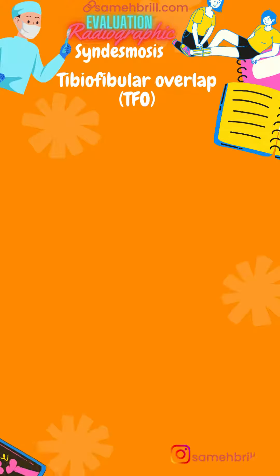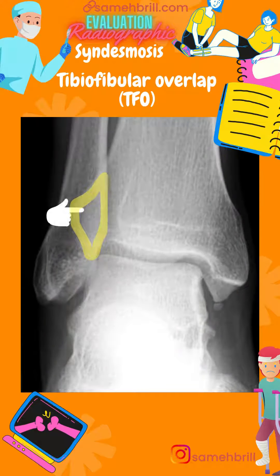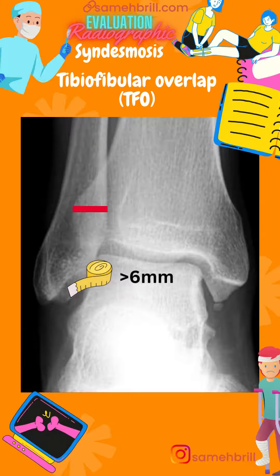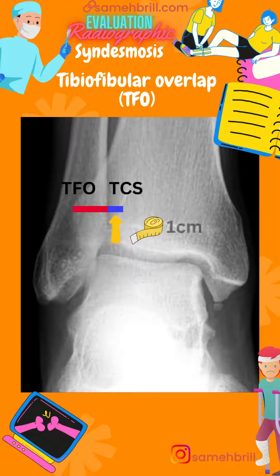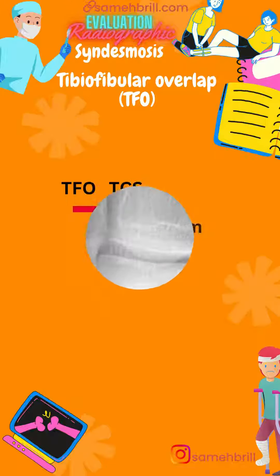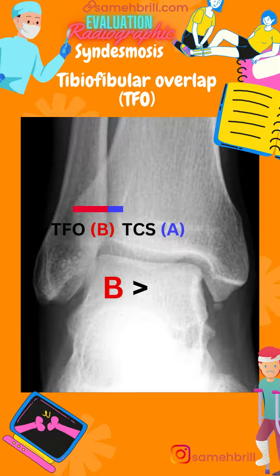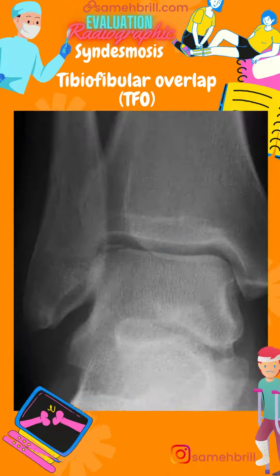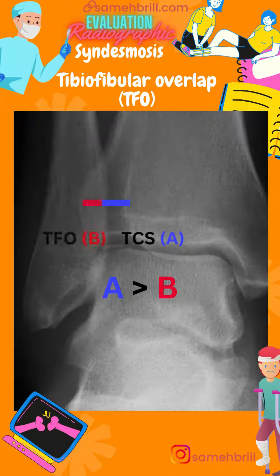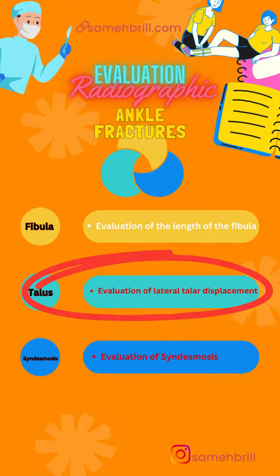The tibiofibular overlap is the distance of the anterior tubercle of the tibia overlapping the fibula. It should be maintained above six millimeters. Both parameters are measured one centimeter above the plafond. On a healthy radiograph, the tibiofibular overlap is greater than the clear space, while in a syndesmotic injury the clear space will be greater than the overlap.